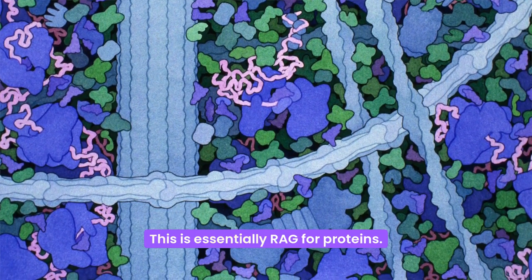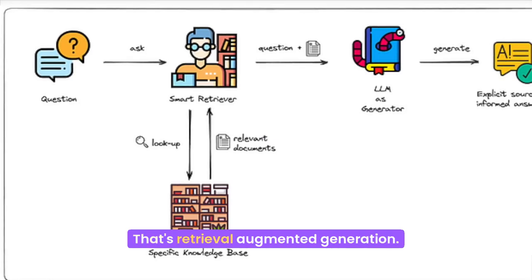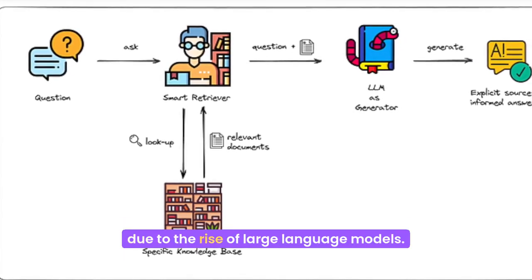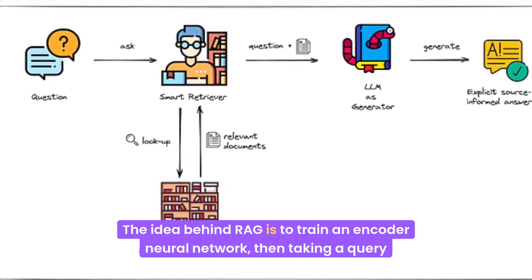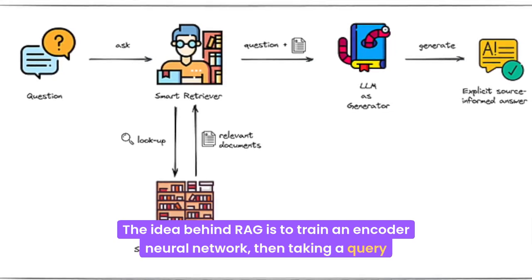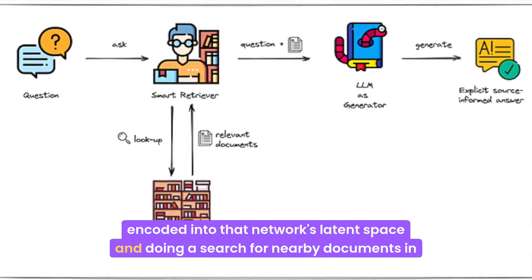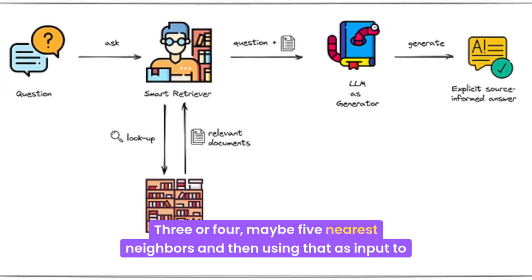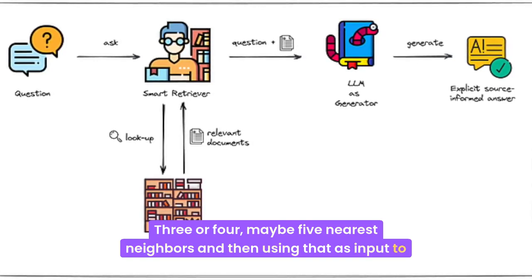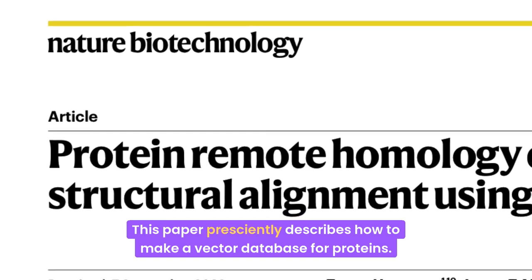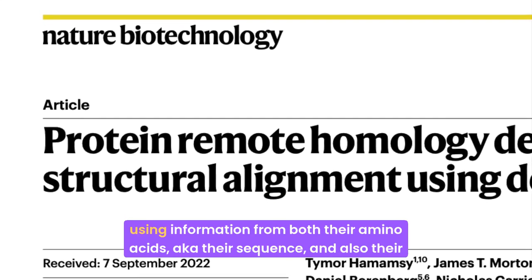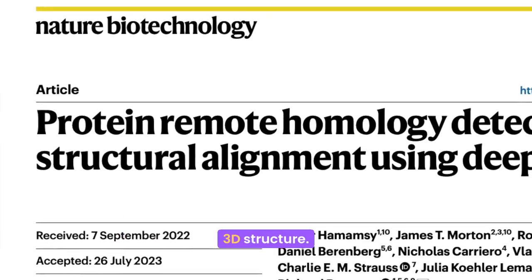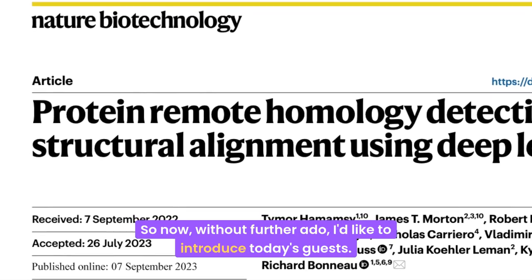This is essentially RAG for proteins — retrieval augmented generation. The world has become acquainted with this concept due to the rise of large language models. The idea behind RAG is to train an encoder neural network, then take a query encoded into that network's latent space and do a search for nearby documents in that encoding — three, four, maybe five nearest neighbors — and then use that as input to a large language model. This paper describes how to make a vector database for proteins using information from both their amino acids, their sequence, and also their 3D structure.